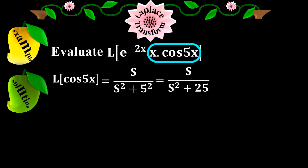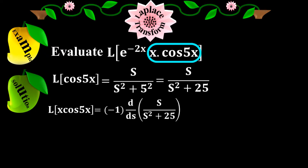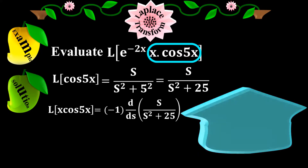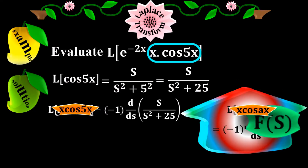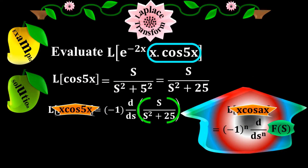Now I find the Laplace of x times cos(5x), ignoring the exponential function e to the minus 2x for now. This equals minus 1 times d/ds of s over s squared plus 25. I applied the formula: Laplace of x^n times f(x) equals minus 1 to the n times d^n/ds^n of F(s), where f(s) is s over s squared plus 25, which is the Laplace of cos(5x) already derived.